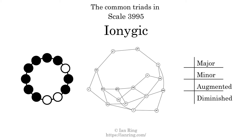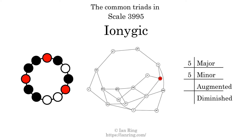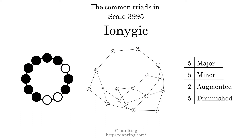The diagram in the center is a graph of parsimonious voice leading between triads. There are 5 major triads, 5 minor triads, 2 augmented triads, and 5 diminished triads.